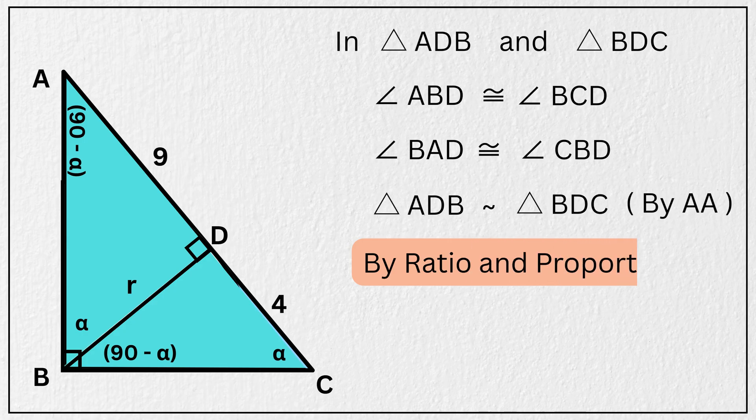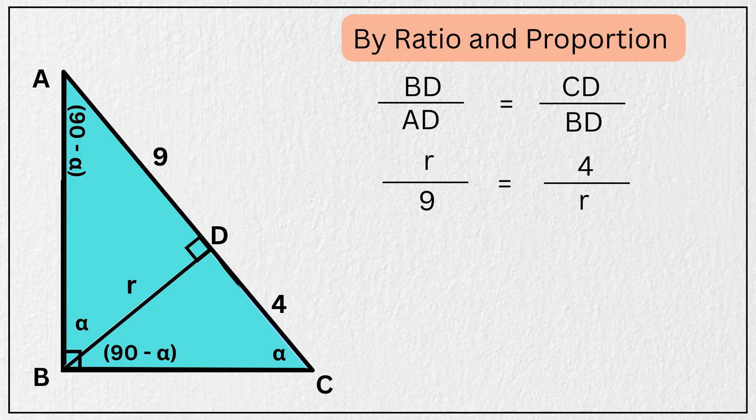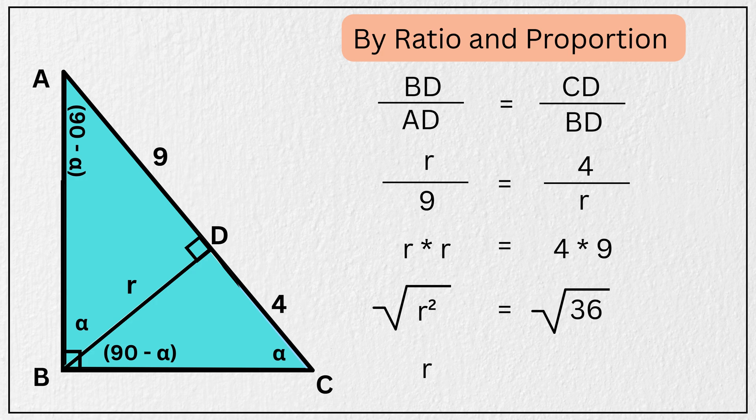So using the ratio and proportion of similar triangles, we have length BD divided by length AD is equal to length CD divided by length BD. So substituting the values, we get R divided by 9 is equal to 4 divided by R. And by cross multiplication, we get R times R is equal to 4 times 9. Simplifying this, we get R squared is equal to 36. And taking the square root of both sides, we get R is equal to 6 units.